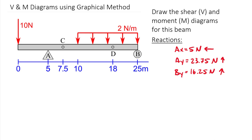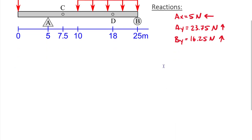To speed up our process, I have already solved for the reactions. To solve for those reactions, you can convert the 2 N/m distributed load into a point load: 2 newtons per meter over 15 meters gives you 30 newtons acting through the centroid, which is 7.5 meters from the right end. Converting to an equivalent point load and solving for reactions gives us the reaction values shown.